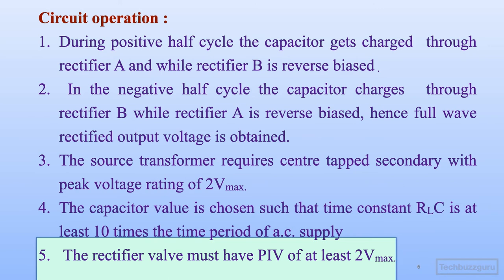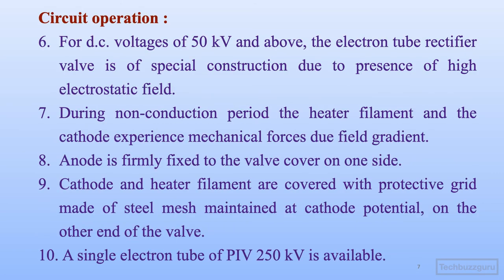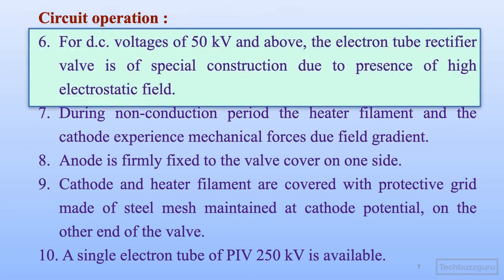Each rectifier valve must have a peak inverse voltage (PIV) of at least twice Vmax — this is the voltage that appears across an individual rectifier when it is in the reverse bias condition. These circuit details are common features of high voltage rectifier circuits, also covered during the half wave rectifier discussion. For DC voltages of 50 kV and higher, electron tube rectifier valves have special construction due to the high electrostatic field.